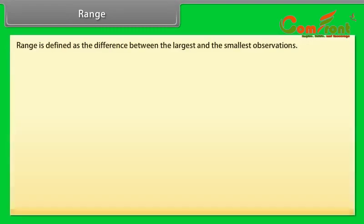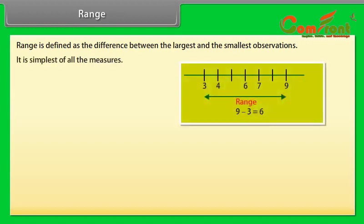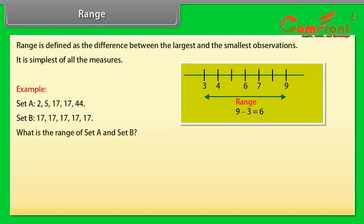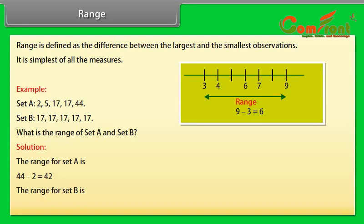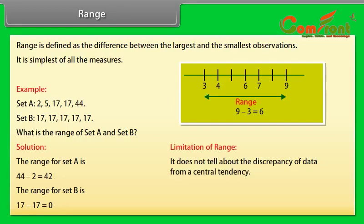Range is defined as the difference between the largest and the smallest observations. It is the simplest of all the measures. For example, the range for set A is 44 minus 2, which equals 42, and the range for set B is 17 minus 17, which equals 0. Limitation: it does not tell about the discrepancy of data from a central tendency.